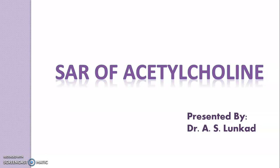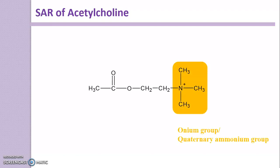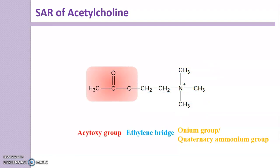Hi, I am Amit Lunkard. In this video, we discuss in detail about the structural activity relationship of acetylcholine. Acetylcholine is nothing but a cholinergic drug. Here we discuss modification of three groups: the onium group, the ethylene bridge, and the acetoxy group, and the effect of these modifications on activity.